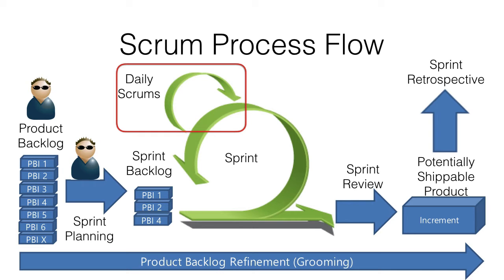The development team is self-organizing, so in theory the Scrum master is not included in these daily meetings — unless he needs to intervene because the progress is slow, or there's disharmony in the team, or the daily 15-minute meetings are not effective. Then he needs to step in and make things right.